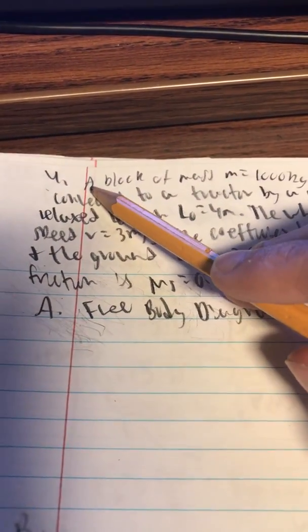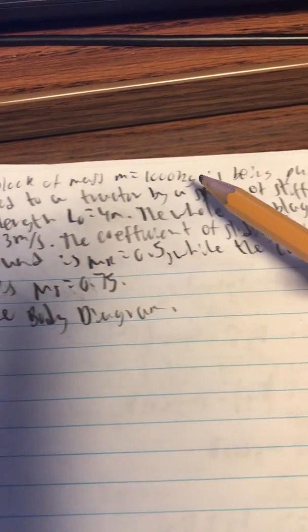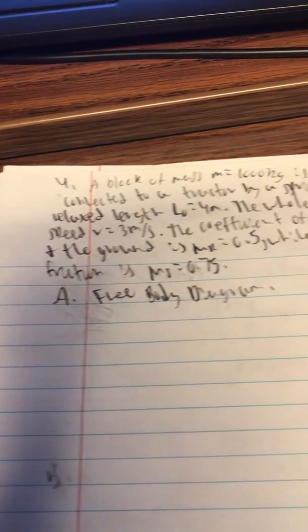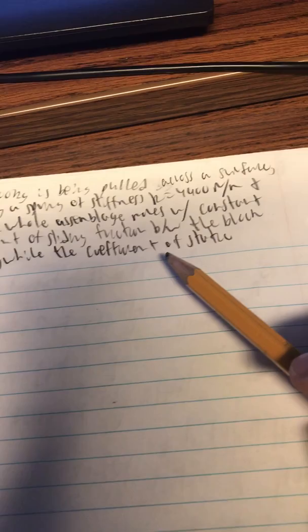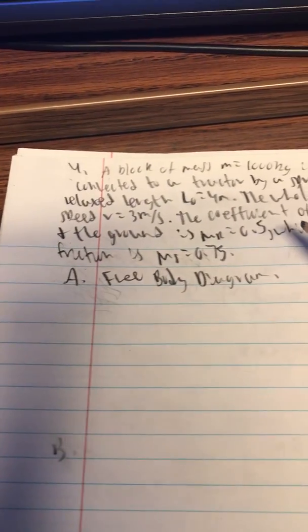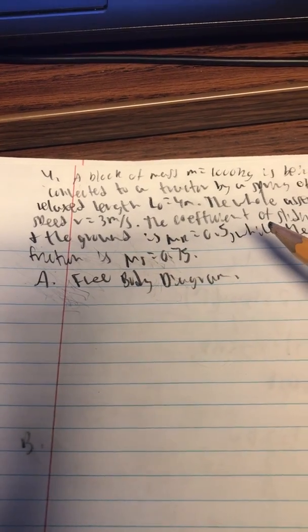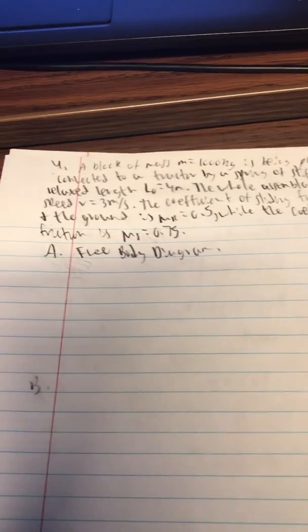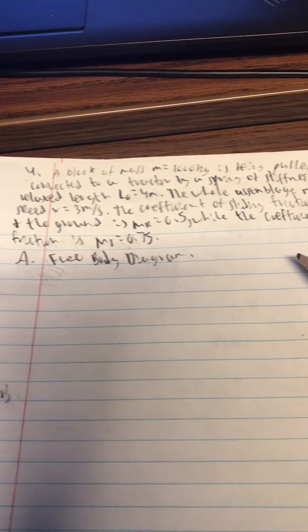Alright, so we'll be working problem number 4 where a block of mass M equals 1,000 kilograms is being pulled across a surface connected to a tractor by a spring of stiffness K equals 4,900 newtons per meter and relaxed length L₀ is equal to 4 meters. The whole assemblage moves with constant speed V equals 3 meters per second.